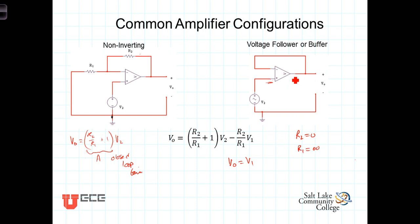Not only is the output the same voltage, but we now have full advantage of the output current capabilities of the amplifier. Typical op-amp output current specifications are on the order of 10 to 30 or 40 milliamps. That may not sound like a lot, but it's enough to drive additional circuitry, whereas the original source may not have had that capability. The first situation to use this is when there's a large source resistance. The second common application is when the source has particularly small current capabilities, or perhaps no current capabilities at all.